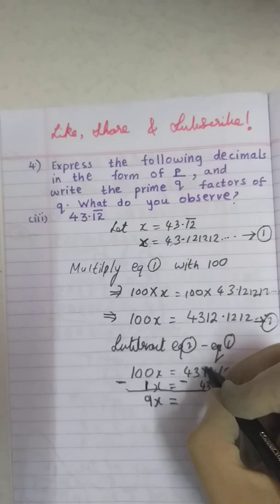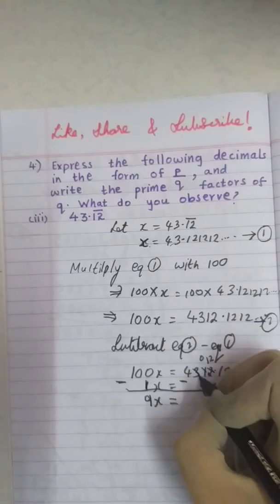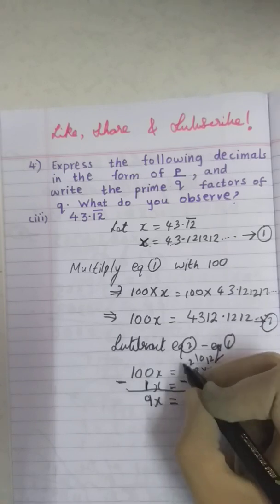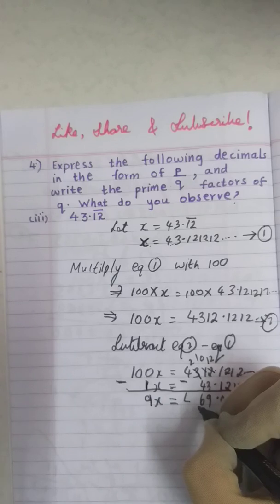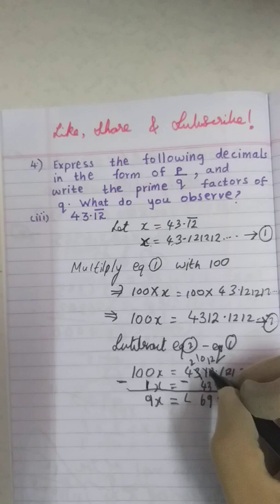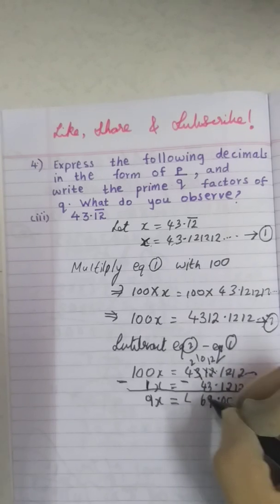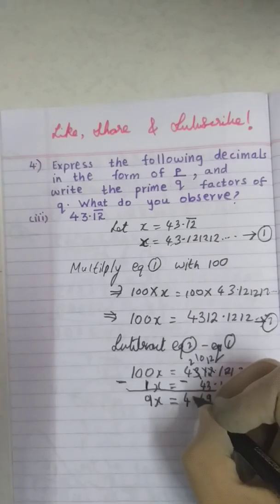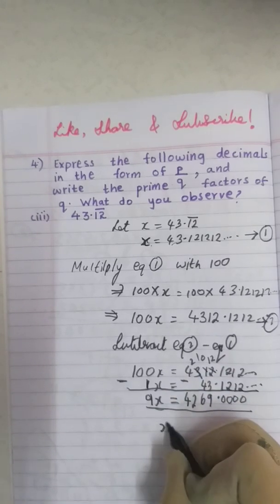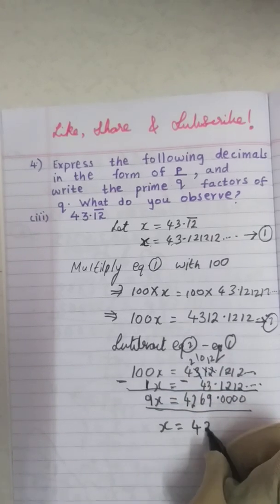2 minus 3 will not go. So this will become 0. This will become 12. 12 minus 3 is 9. This will become 2. This will become 10. 10 minus 4 is 6. This will become 4. 12 minus 3 is 9. 10 minus 4 is 6. This is 4269. It's correct only.